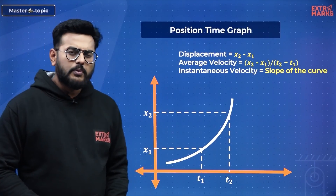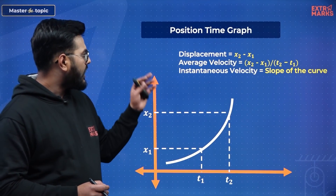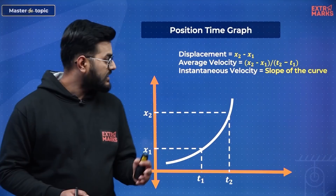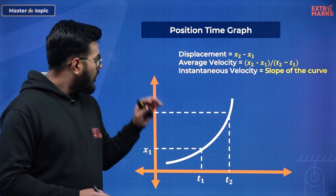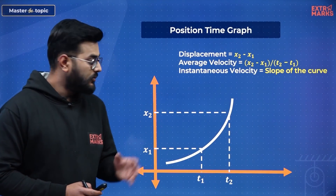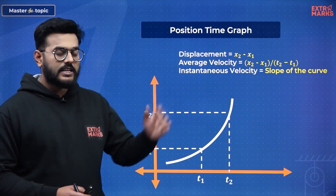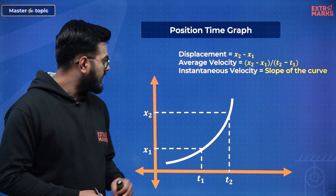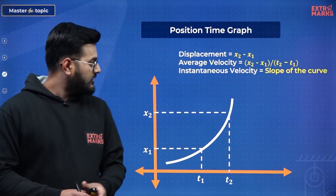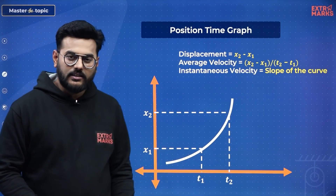So from a position-time graph, what things can I decode? I can find the value of displacement — that is, change in position. I can also find the value of average velocity, which in this case will be (X2 − X1) / (T2 − T1). And I can also find the value of instantaneous velocity from this XT curve.